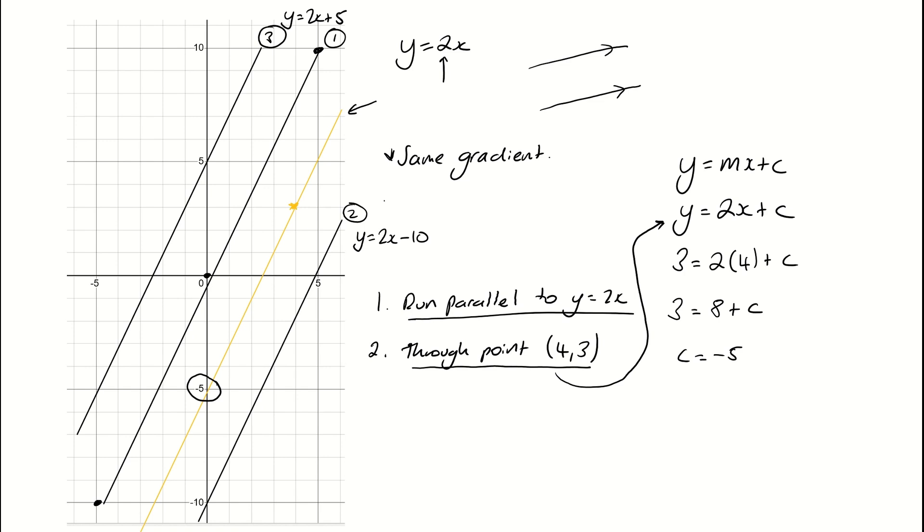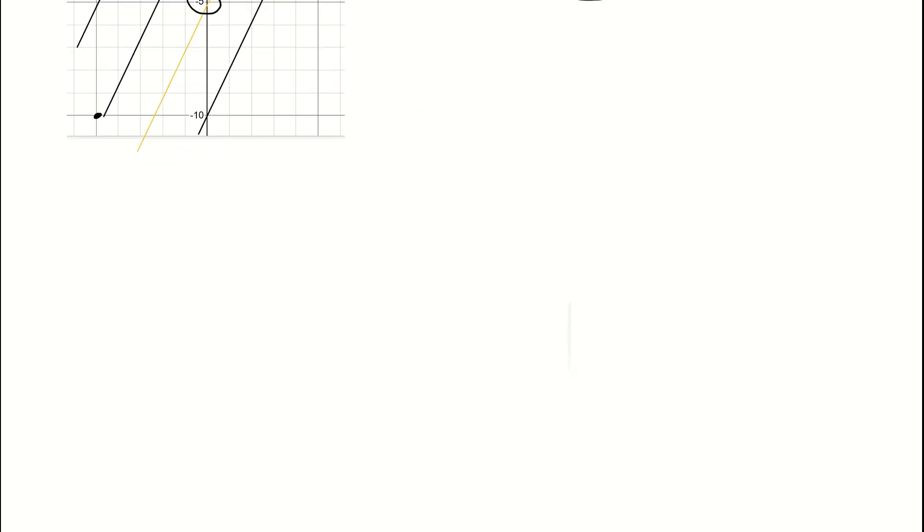So I get the equation of this yellow line here has a gradient of 2 and a y-intercept of negative 5. So hopefully that helps understand parallel lines, the idea that the gradients have to be the same. And then how we can use an extra piece of information, like what point it has to go through, will dictate how high or low I want my line to sit. Let's do one more example.